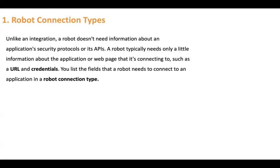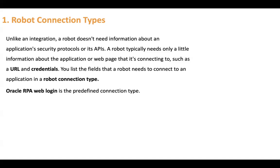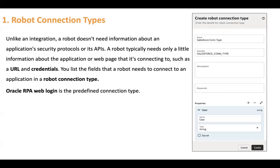You list the fields that a robot needs to connect to an application in a robot connection type. For example, you need URL, username, and password — so you create one connection type and use it to create robot connections. By default, RPA provides one predefined connection type known as Oracle RPA Web Login, similar to how various adapters are available out of the box.